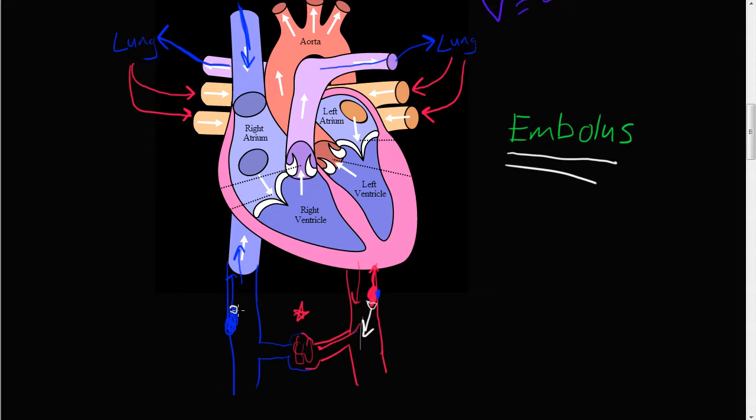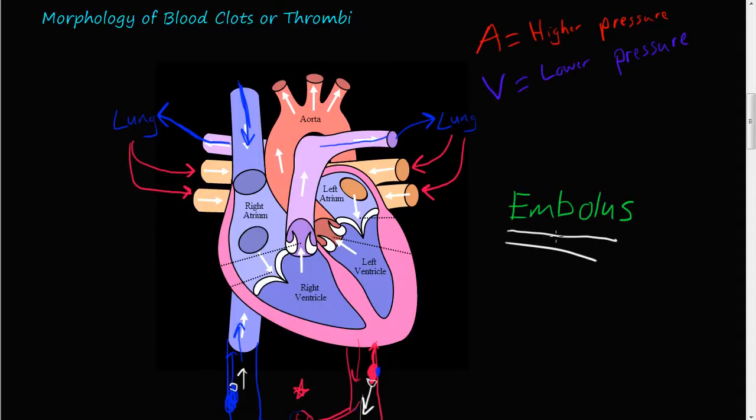If it was on the vein side, it would shoot back towards the heart. So emboli can have, let's talk about the morphology, what they look like.